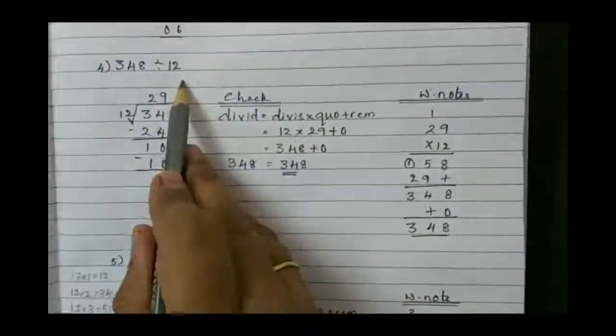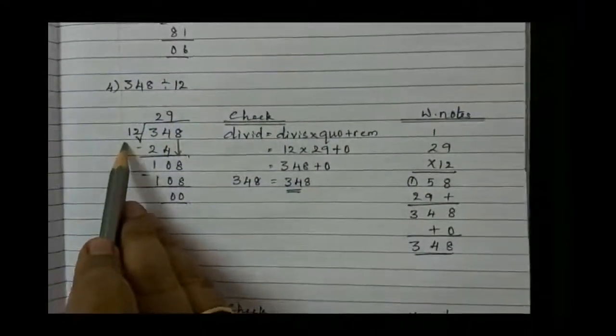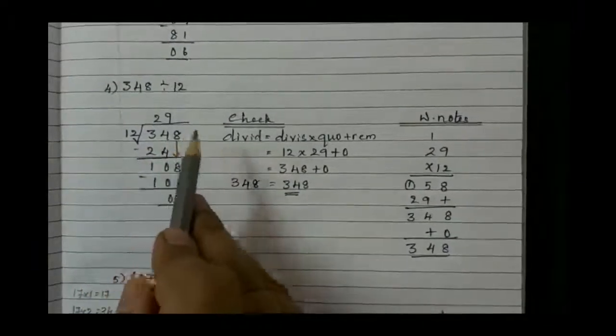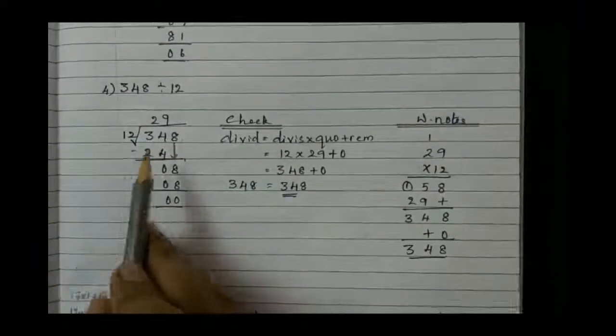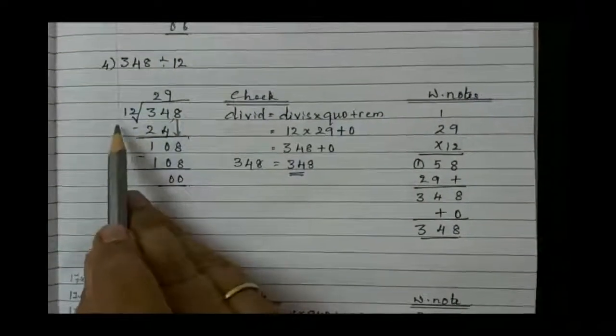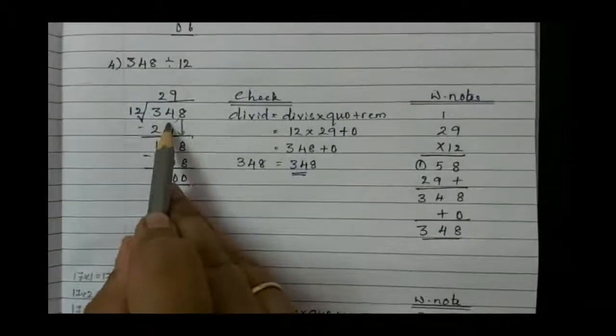348 divided by 12. So 12 outside and then 348 to be divided by 12 table. Choose two digits, that is 34. In table 12 when do we get 34?